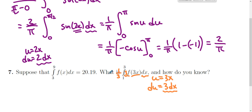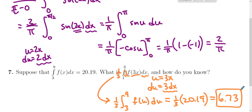So, this is 1 third times the integral of, well, f of 3x is f of u, 3 dx is du from here to here. And that turns out to be, and we got it.